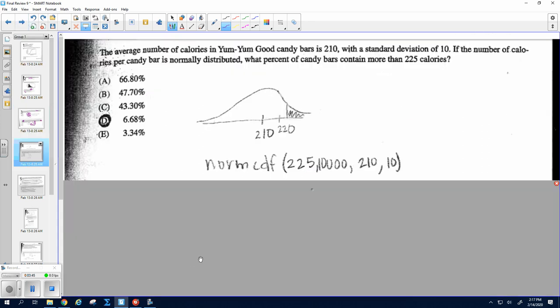Okay, number seven. Just do norm CDF. We want to know more than 225, so our lower bound is 225. Our upper bound is a big number. The mean is 210, and the standard deviation is 10, and that gives you D, 6.68%.